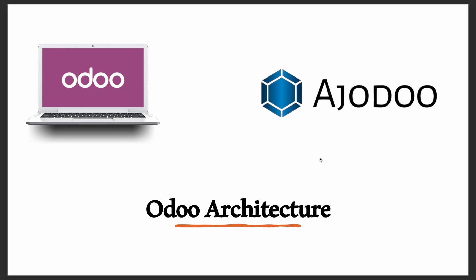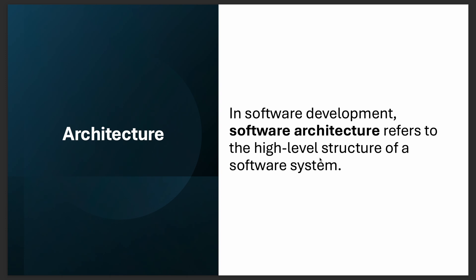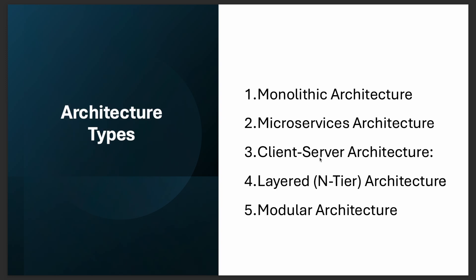Welcome back to Odoo. Today we're going to check the Odoo architecture. First, what is architecture? In software development, software architecture refers to the high-level structure of a software system. Here I have mentioned five types, though there are more: monolithic, microservices, client-server, layered, and modular architecture.